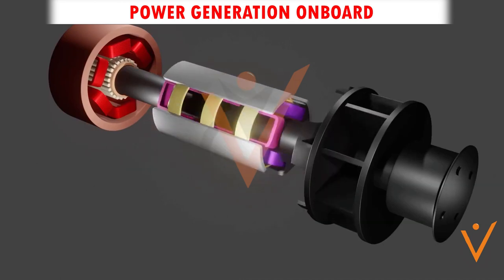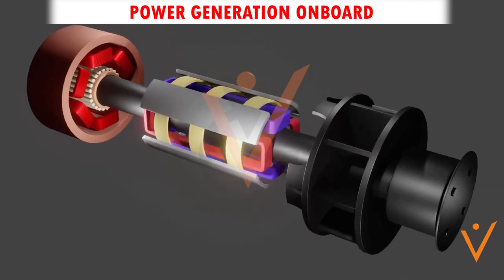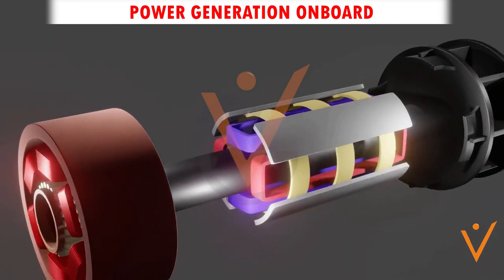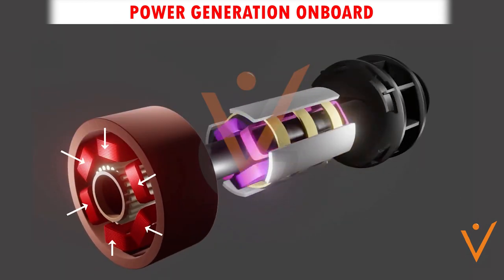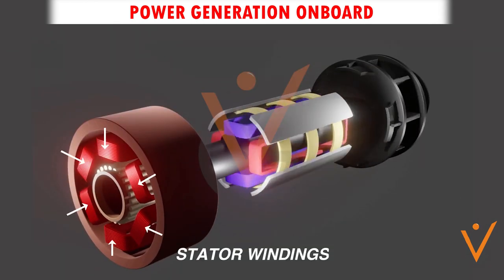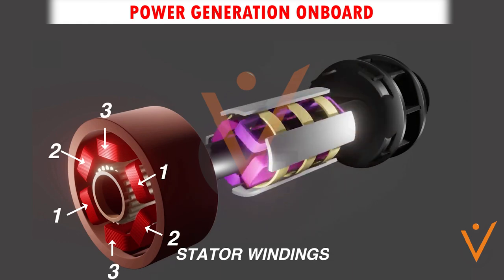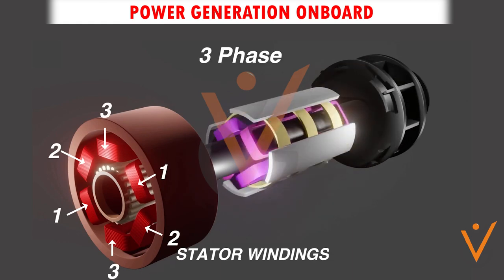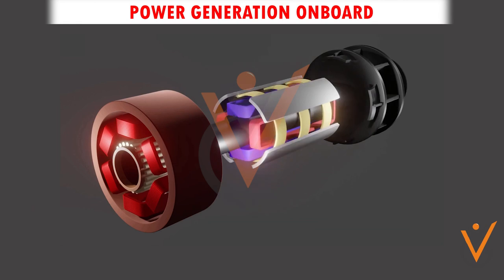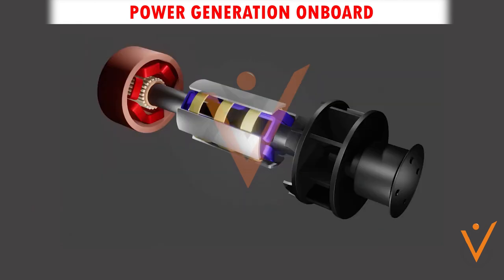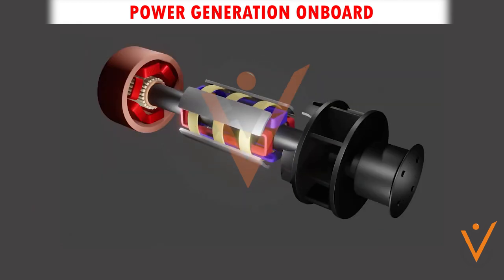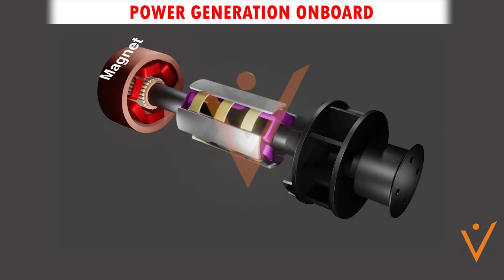The rotor shaft is attached with slip rings. The stator surrounds the rotor and is attached to three sets of copper wire coils, known as three-phase windings. There are three sets because the generator is a three-phase generator. The arrangement can be of two or more electromagnets — the more the number of poles, the more the current produced.